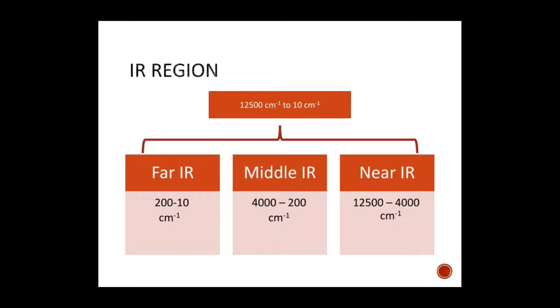For the identification of functional groups, the middle IR region of 200 to 4,000 cm⁻¹ is used.